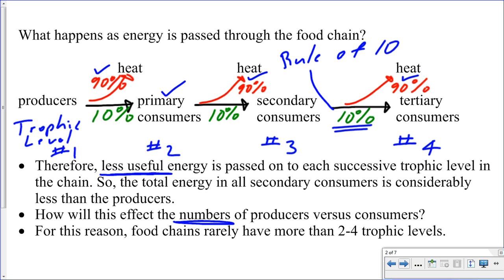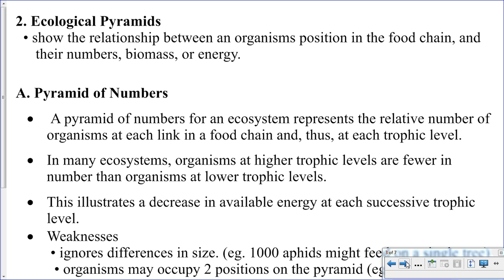This is the reason why we do have a limit to the number of trophic levels. Eventually there's just not enough energy to be passed on to support another trophic level. The three different ecological pyramids we're going to take a look at are referred to as the pyramid of numbers, the pyramid of biomass, and the pyramid of energy.